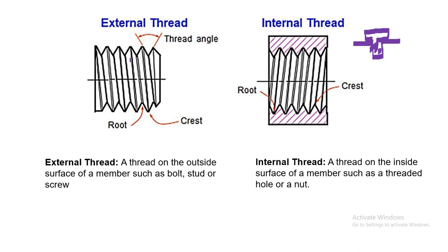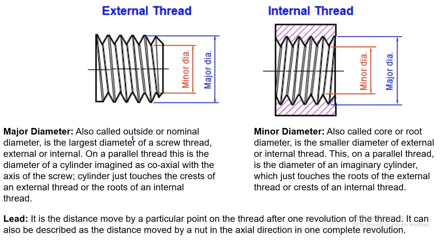This is internal thread and this is external thread. The thread angle, the crest, and the root are identified for both. In the internal thread, the crest is this one and the root is this one. The major diameter — also called outside or nominal diameter — is the largest diameter of a screw thread, external or internal. On a parallel thread, it is the diameter of a cylinder coaxial with the screw axis that just touches the crest of an external thread or the roots of an internal thread.